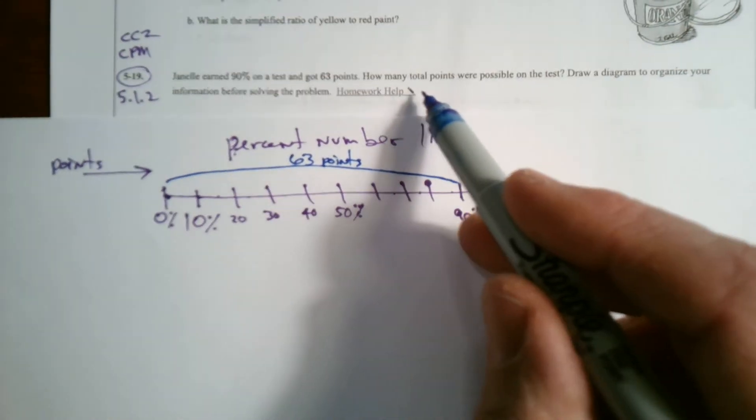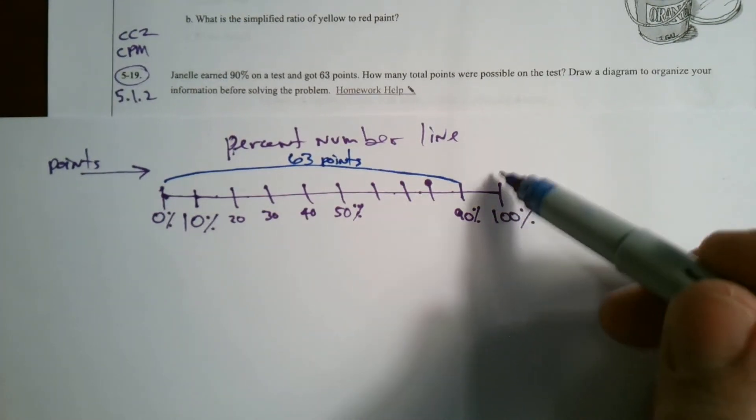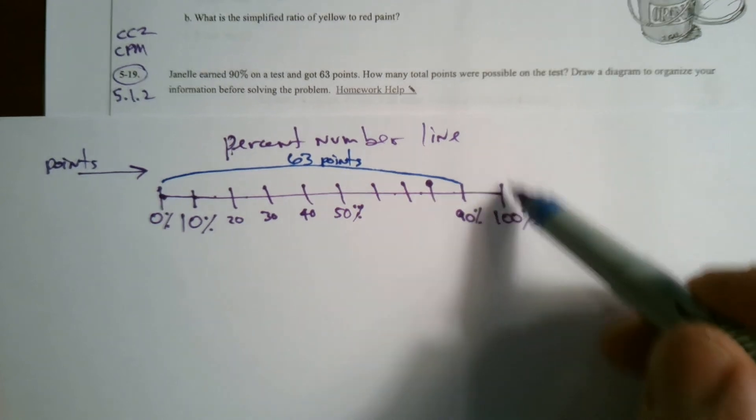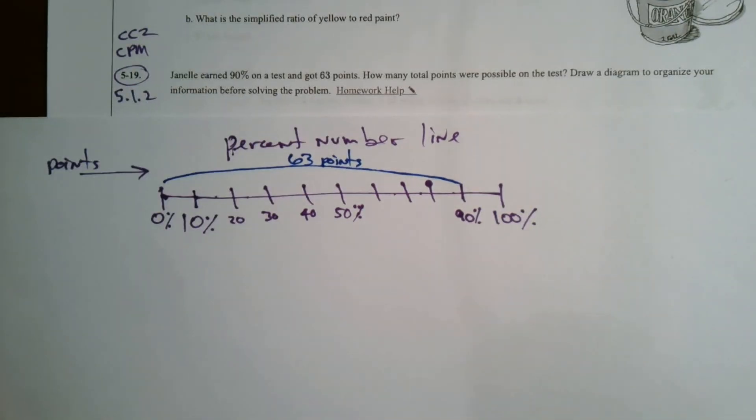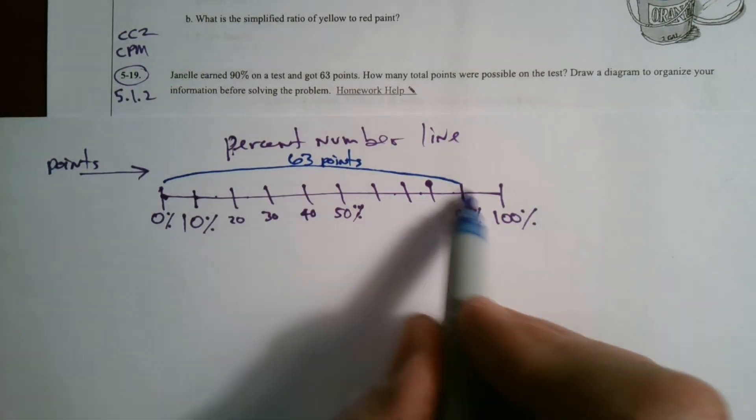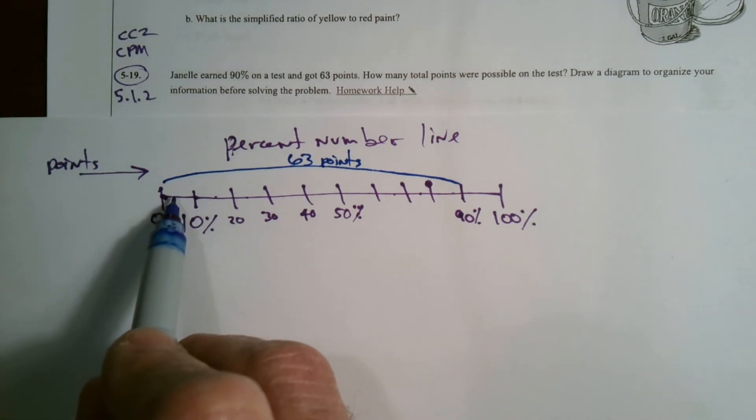So what I am asking, it's asking, what is the total then? What was the total points possible? Well, from here to here being 63, what's nice if you think about it, look at this.